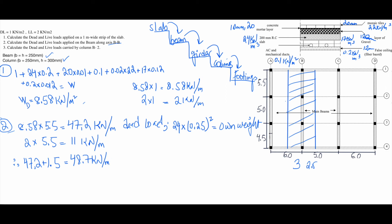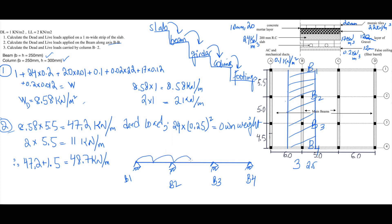To understand this, I'll draw how it looks. We have beam BB with columns at B1, B2, B3, and B4. The spans are 5.5 m, 5 m, and 4.5 m. We have the distributed dead load and live load — 48.7 and 11 kilonewton per meter respectively — applied along the beam.